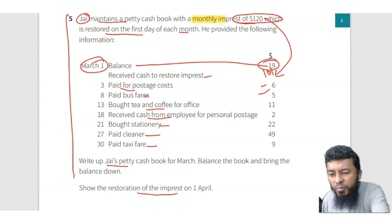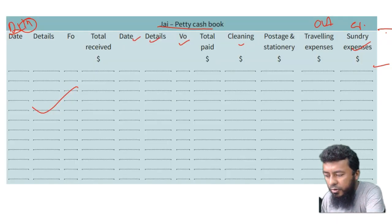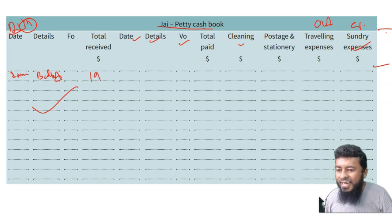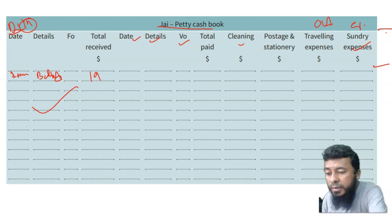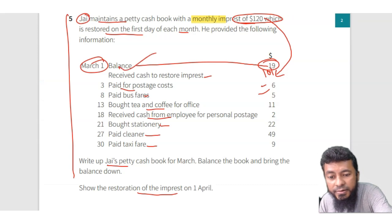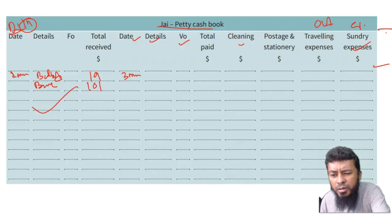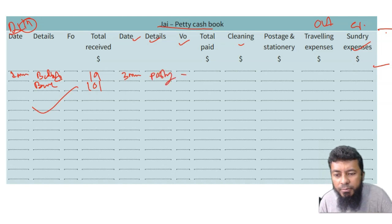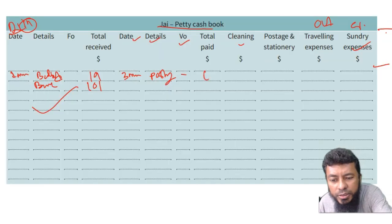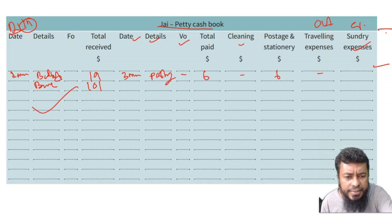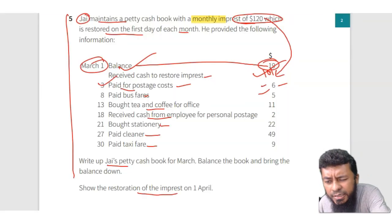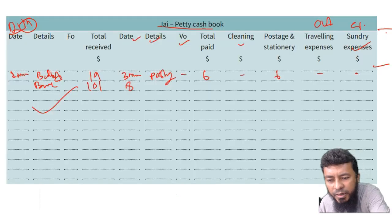Let's get started. First of March — we write 'balance b/d' with 19 dollars. The same day, the restoration comes through bank: 101 dollars. So we have both the opening balance and the restoration entered on the debit side. Then moving to expenses — third of March, postage paid: write 6 dollars in the total column and 6 dollars in the postage column. Then number eight — eighth of March, bus fare: 5 dollars.